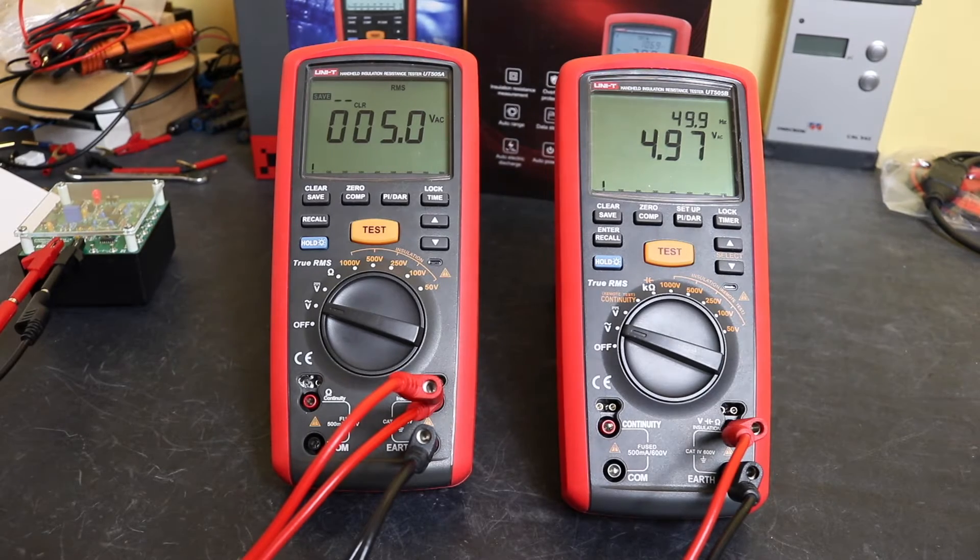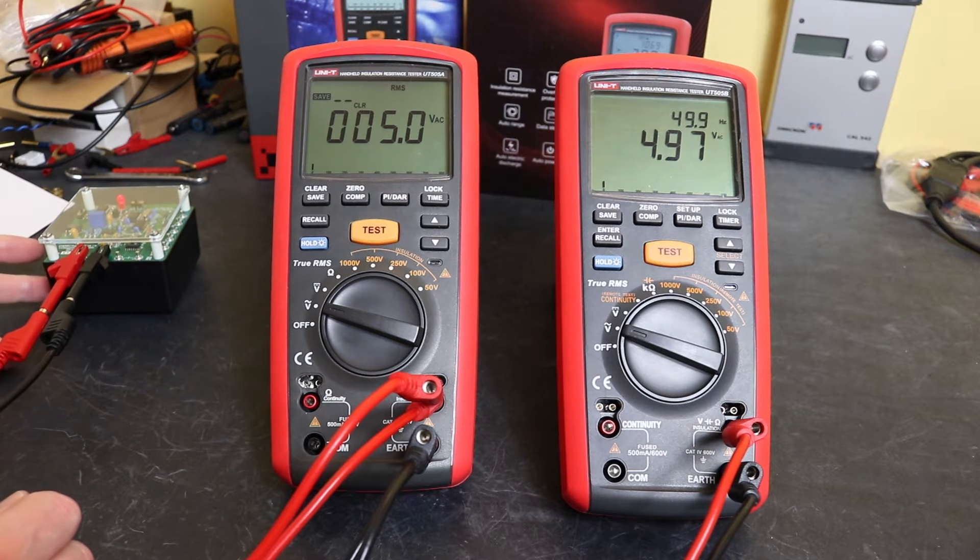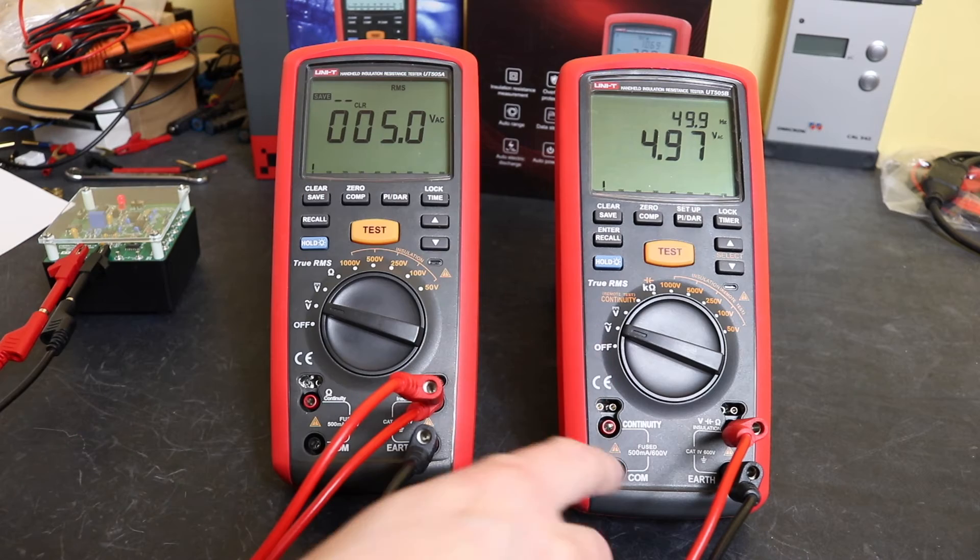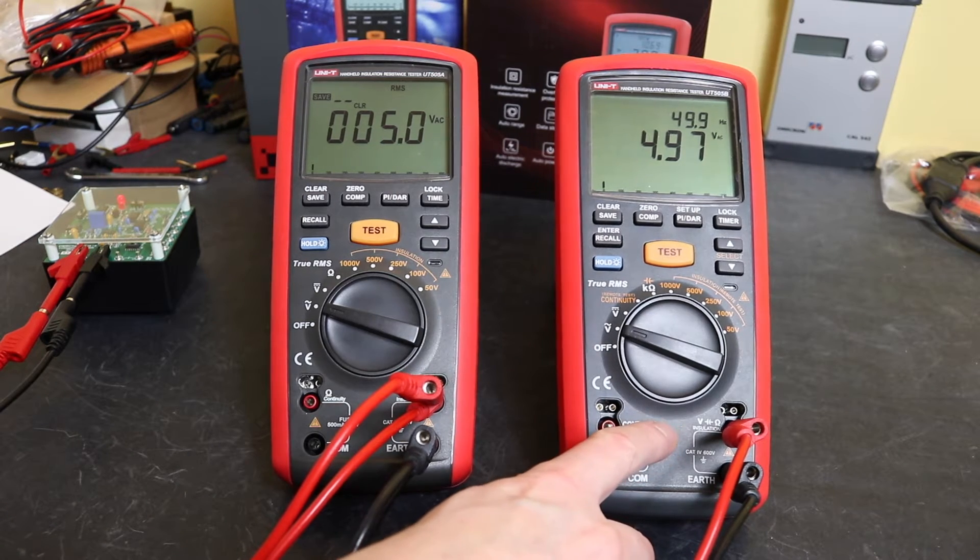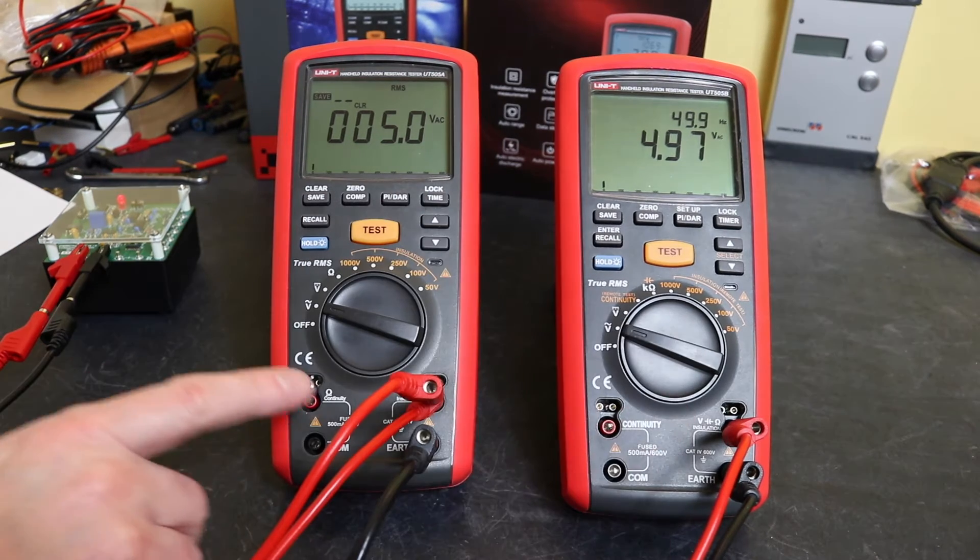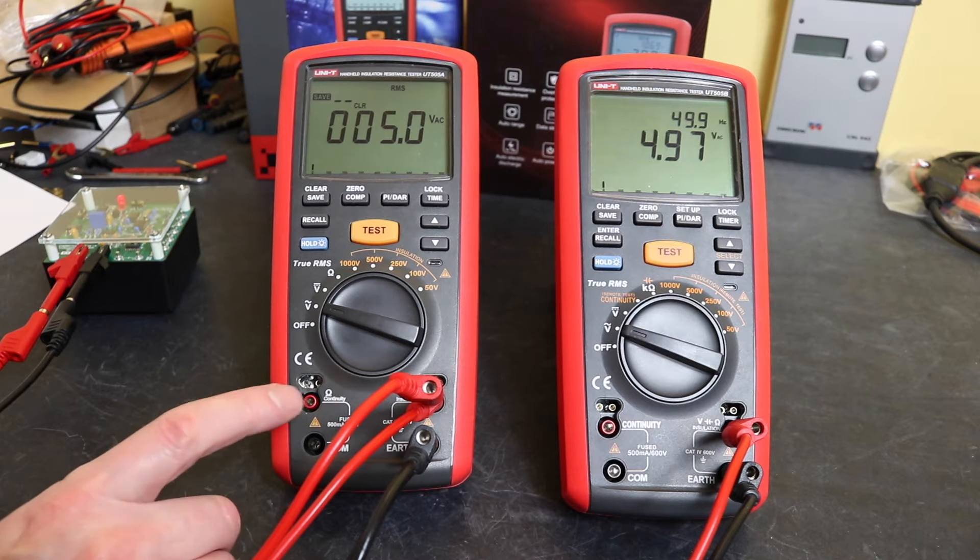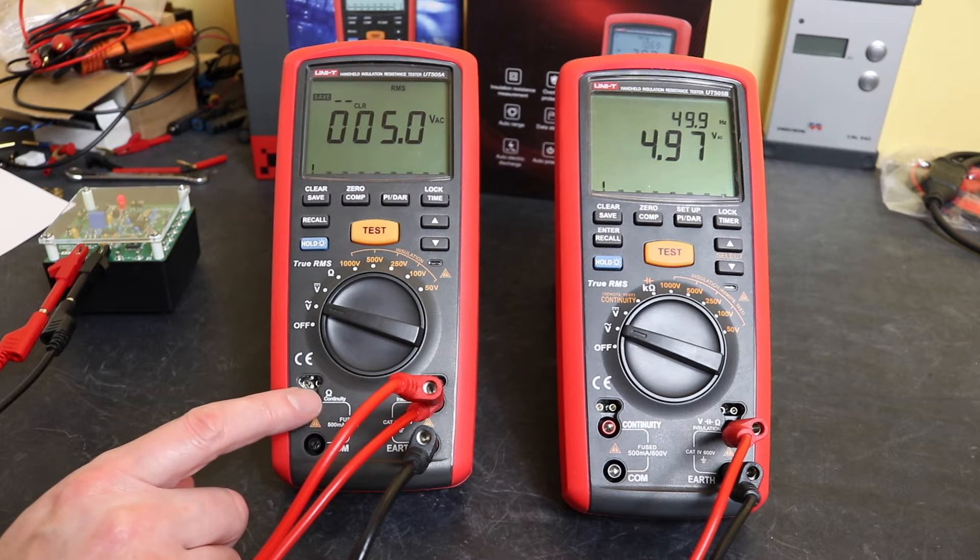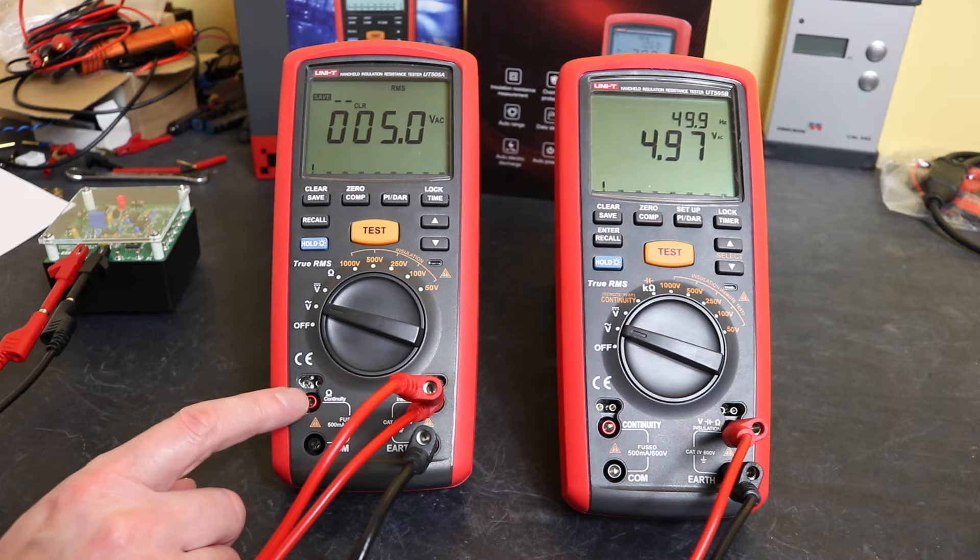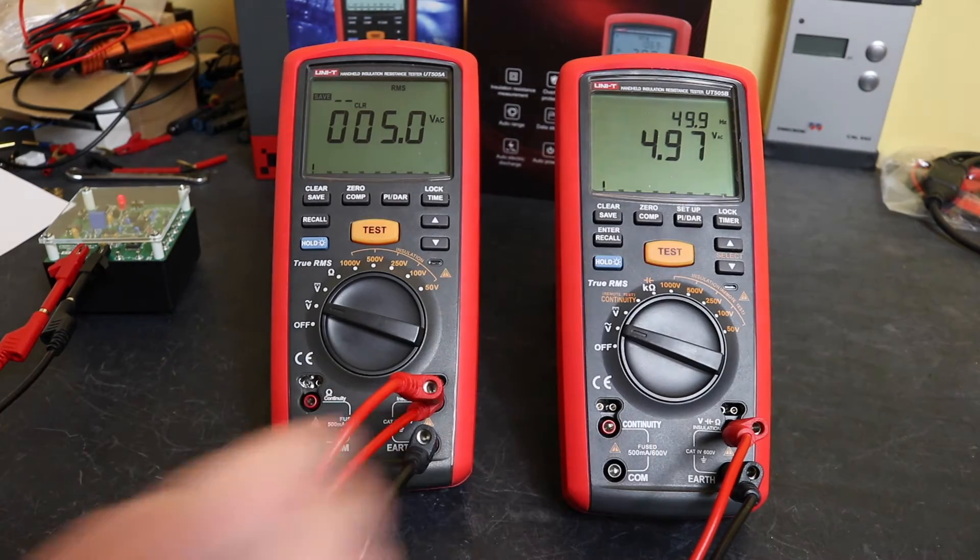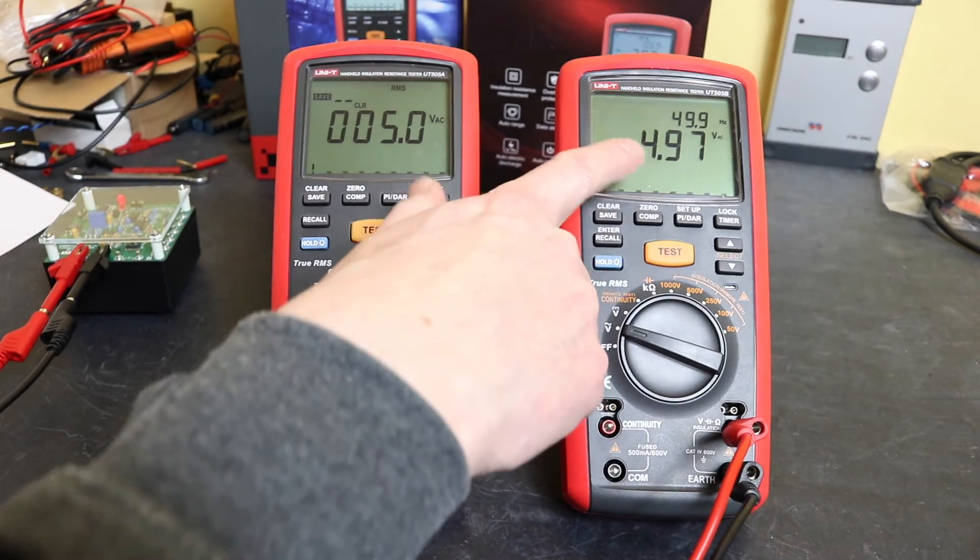Both instruments will measure AC and DC volts. We're currently set to AC volts, so I'm running a little signal off the DMM check plus here. You do get the extra decimal place on the UT505B that you don't see on the A. Accuracy spec wise, they're both pretty much the same there, no real significant difference in practice. You can see we're running 5 volts AC on here, 4.97 on the B.